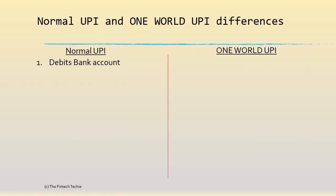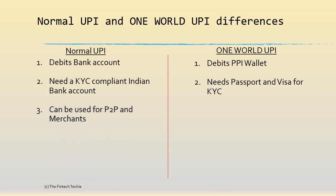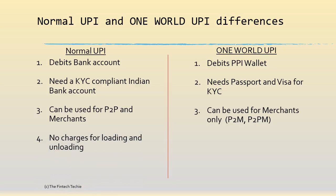The key differences: normal UPI debits the bank account instantly, whereas UPI One World is a PPI — a prepaid instrument, a wallet — so it debits the wallet immediately when you use it. Normal UPI requires a KYC-compliant Indian bank account, whereas One World only needs a passport and visa. Normal UPI can be used for P2P and merchants, whereas One World is used for merchants only. There are no charges for loading and unloading normal UPI; however, for One World you need to pay currency conversion charges.